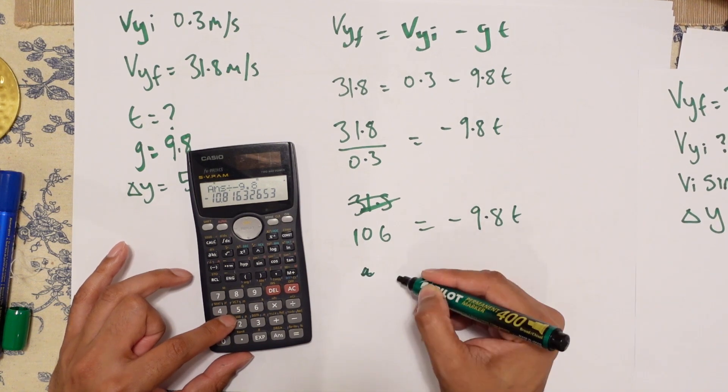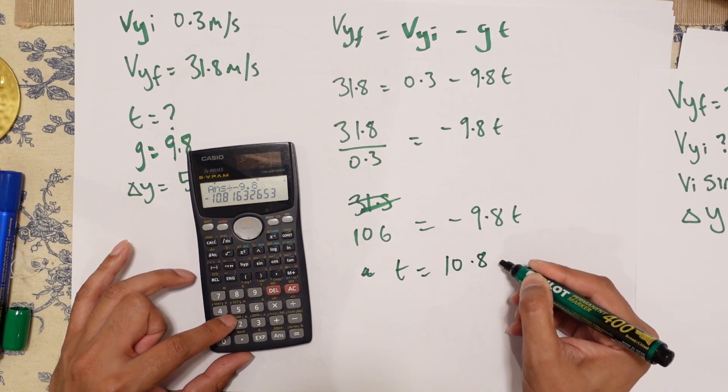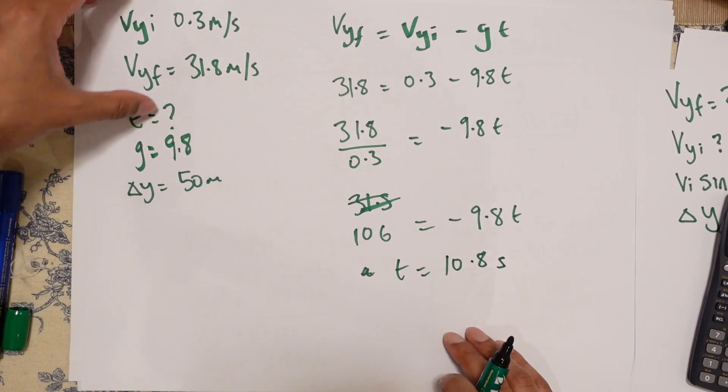So divided by minus 9.8, which is minus 10.8. So T, let's just call it 10.8, because you can't have a minus thing. 10.8 seconds. So that's that final bit.